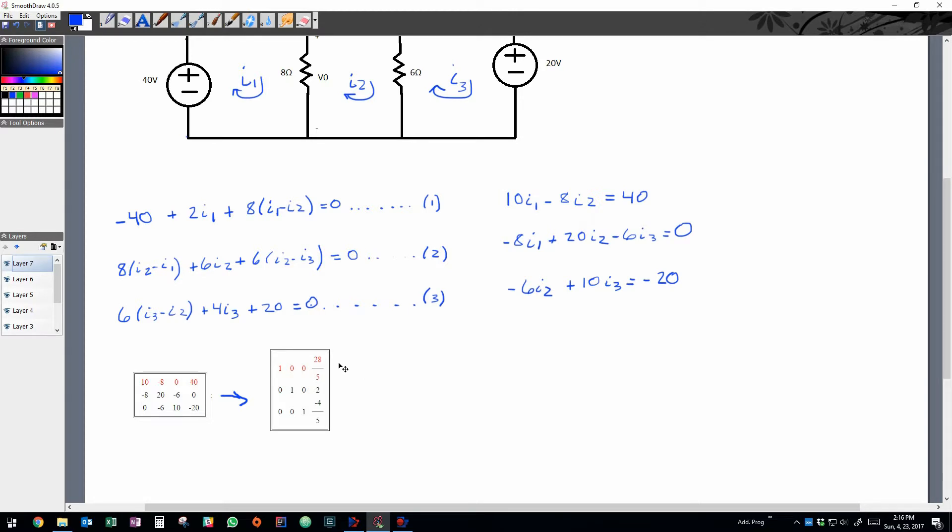So as you can see, we've used reduced row echelon formula to actually reduce the system of equations down to what i1, i2, and i3 are equal to, which is going to be what's in the farthest right-hand column.